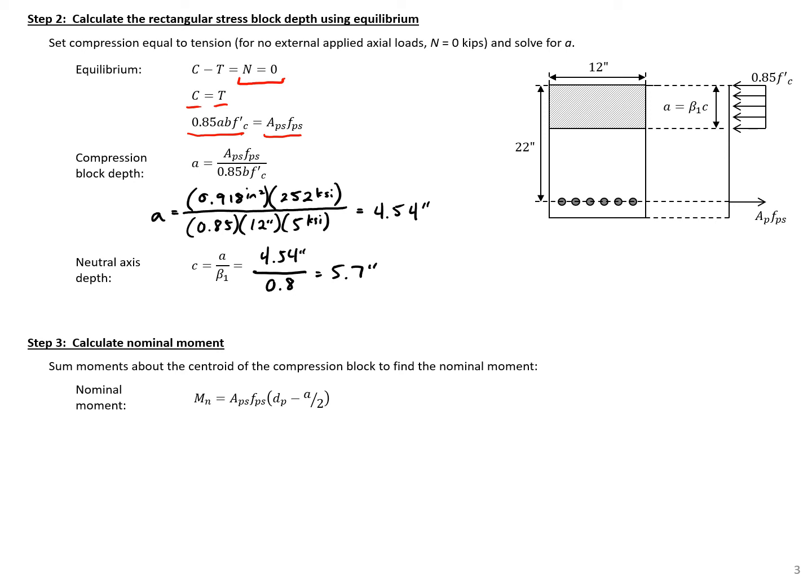Next, we calculate the nominal moment by summing moments about the centroid of the rectangular stress block: A sub p times f sub ps times the distance between the block centroid and strand centroid, which is d sub p minus A over 2. Plugging in our values,